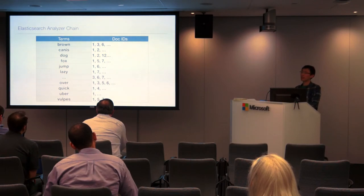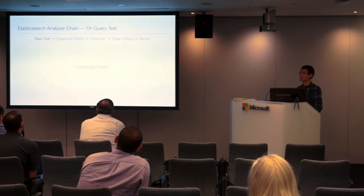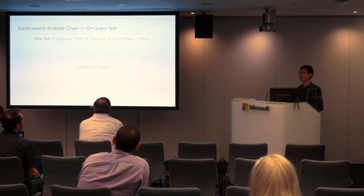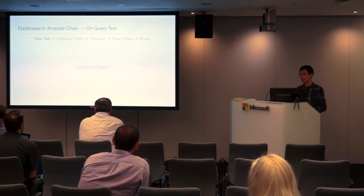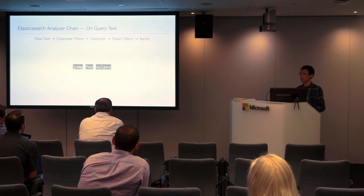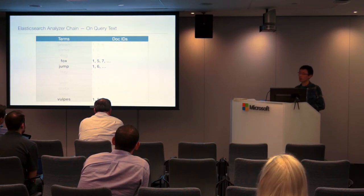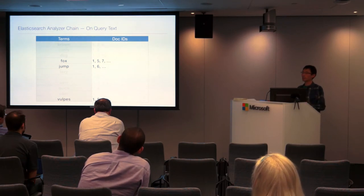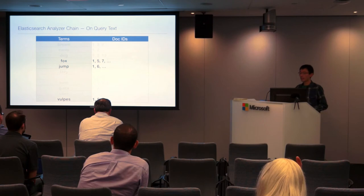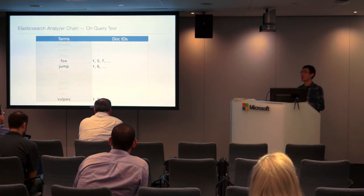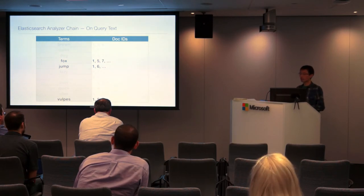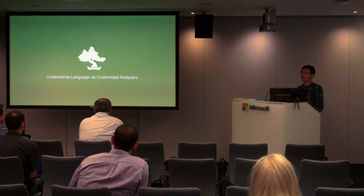The magic comes when we're actually querying for this data. Say someone comes in and searches for 'jumping foxes.' The magic happens when we run this query string through the exact same analyzer chain we used to index the data. If we do that, we also inflate and normalize the meaning of this query string into three tokens. Then it's a simple matter of looking up those tokens in our dictionary list — immediately we know where and in what documents they appear, the frequency of those words across all documents, and the intersection of documents. This lets us know the semantic ideas behind what people are searching for and writing about. That's how Elasticsearch understands language via customized analyzers.